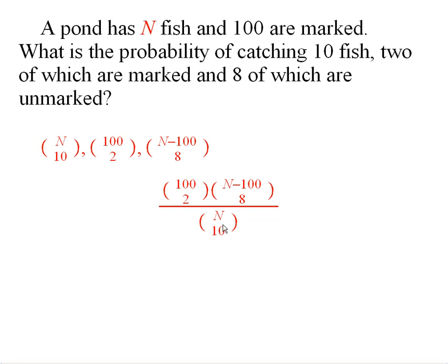Now one of the things that people do is they use this information in order to estimate N. What you do is you try and choose N in such a way as to maximize the likelihood or probability that this particular outcome occurs. And this can actually be used to estimate the number of fish in the pond.